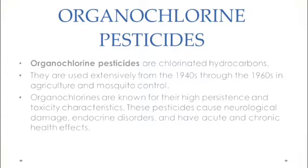Organochlorines are known for their high persistence and toxic characteristics. They are very toxic to insects and pests, instantly killing them, which is why they are called pesticides. These pesticides cause neurological damage, endocrine disorders, and have both acute and chronic health effects.